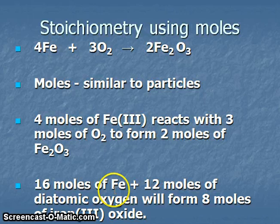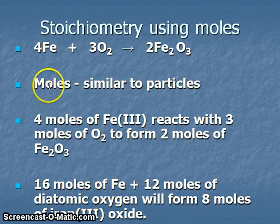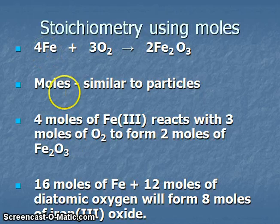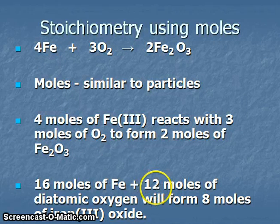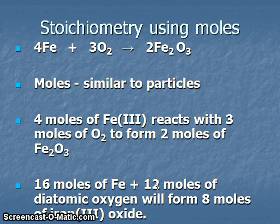We can change these numbers. So if we have 16 moles of iron — which is 4 times the amount that the equation tells us — that would mean that we need 12 moles of diatomic oxygen to react with it. And that reaction would produce 8 moles of iron(III) oxide.